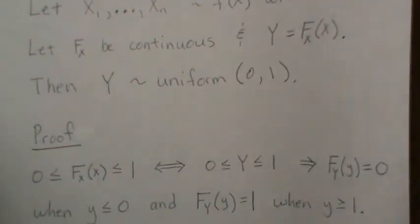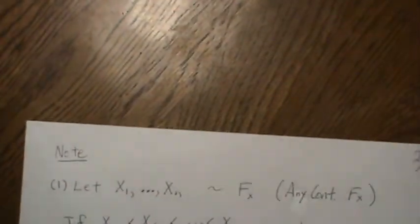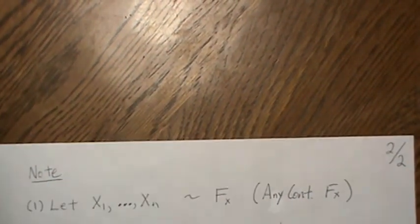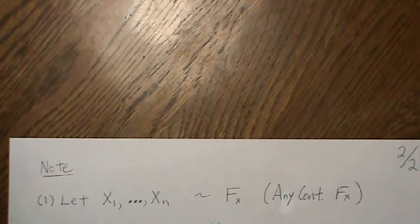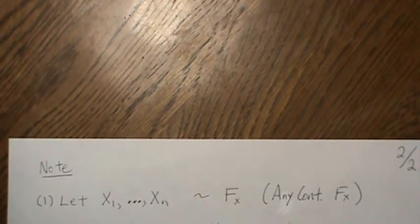Therefore F of Y is uniform - the CDF is equal to Y, and so that's the property of the uniform. That's a simple little proof.